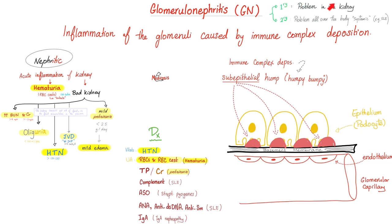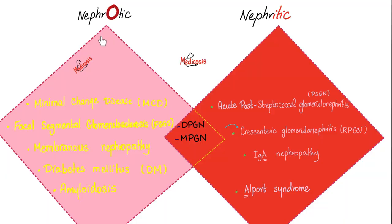Moreover, it could be primary — where the problem originated in the kidney — or secondary, started by a previous disease process like lupus. Here are the diseases that cause nephrotic syndrome, and here are the diseases that cause nephritic syndrome.